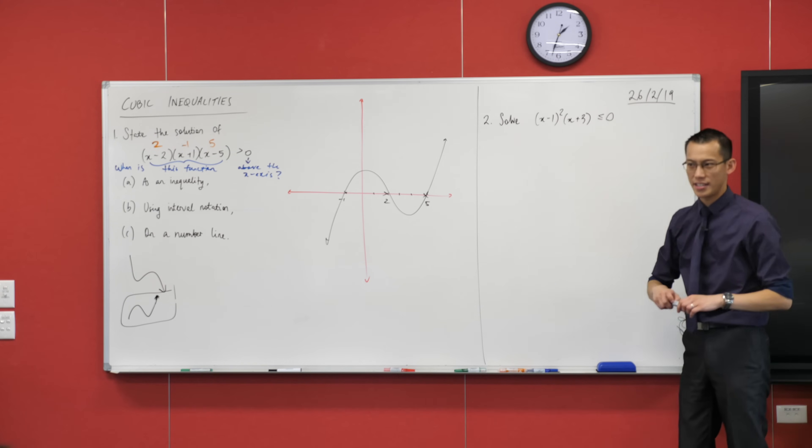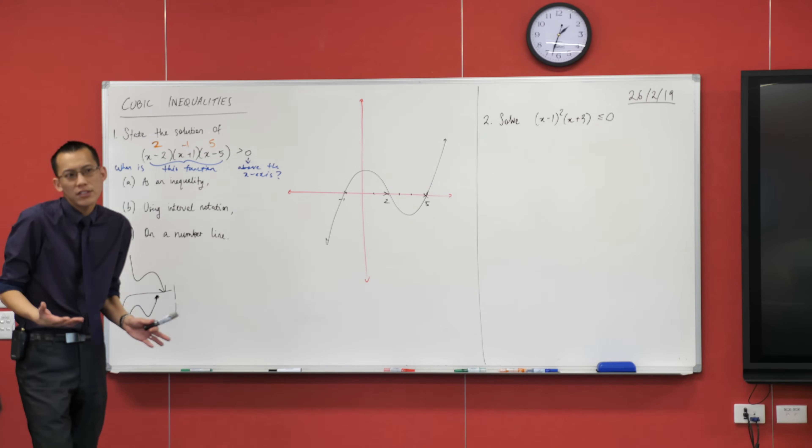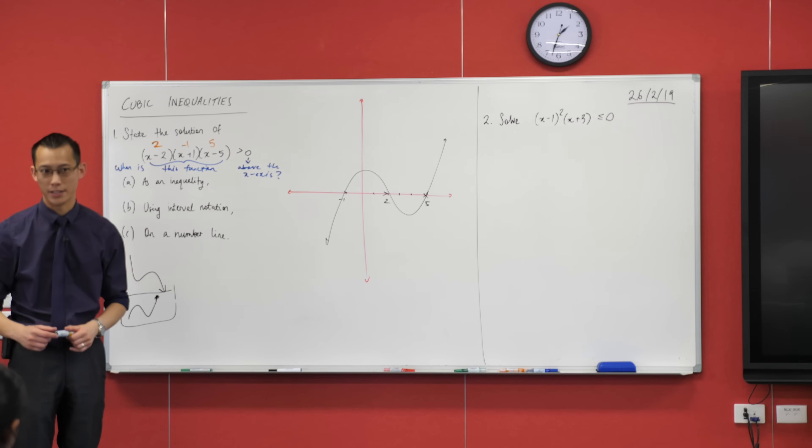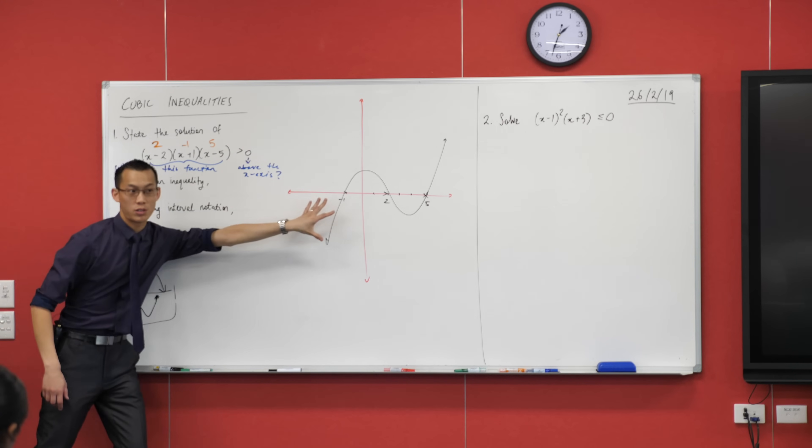Now at the moment, I've got all the x-intercepts there and I just use that to get a general shape. I hope you notice I haven't gotten the y-intercept yet and at the end of this, once we've finished answering the question, I'm going to ask you why I didn't bother to find it. But for now, I'm going to go back to this blue writing. I now know what the function looks like.